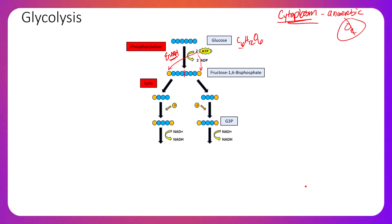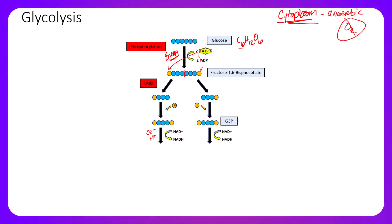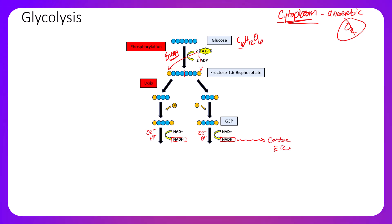Once we have our G3P produced, we then bring in our low-energy electron carriers known as NAD+. The NAD+ is going to take a pair of electrons and a hydrogen ion from our G3P, adding them to convert NAD+ into NADH. Both sides take the exact same thing — two electrons and a hydrogen ion. The NADH is then transported into the mitochondria where it will bond to the inner mitochondrial membrane, the cristae, where it will be utilized during the ETC for chemiosmotic phosphorylation to make large amounts of ATP.